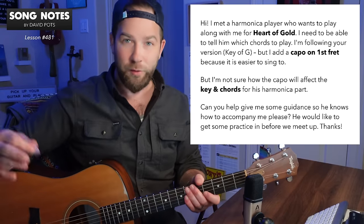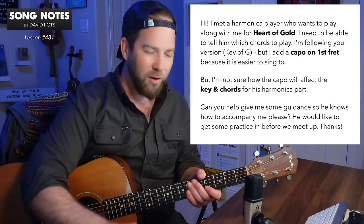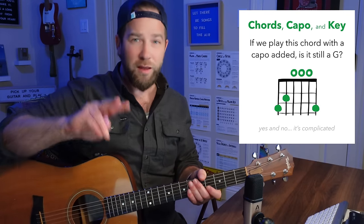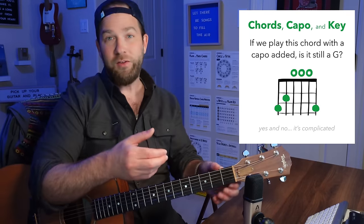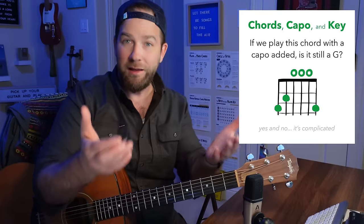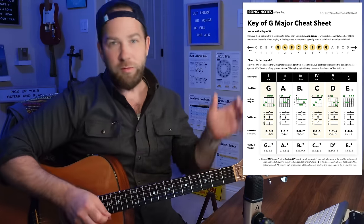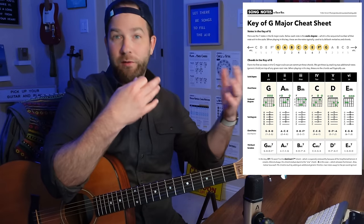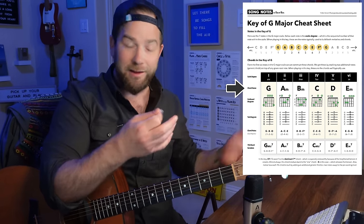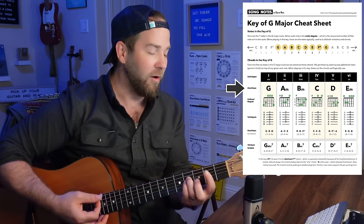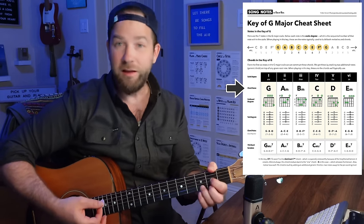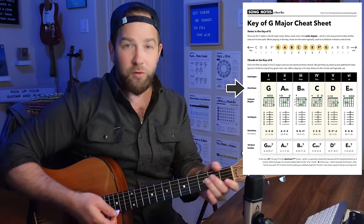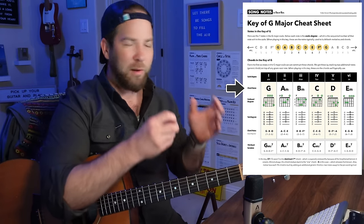A couple of terms I want to bring up and make sure we're on the same page with. When we say what key we're in, I think that can mean almost two things when it comes to guitar. If I say this is going to use chords in the key of G, what that really means is we take the G major scale and construct chords off of each of those tones — the diatonic chords in that key. So for G, that's G, A minor, B minor, C, D, E minor, and F sharp diminished.